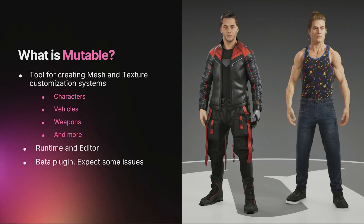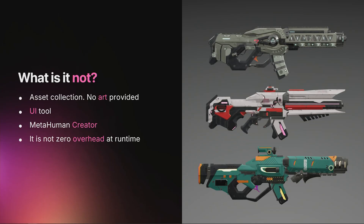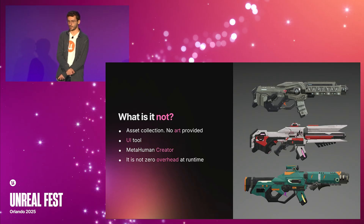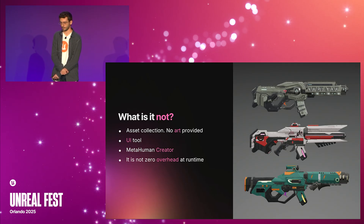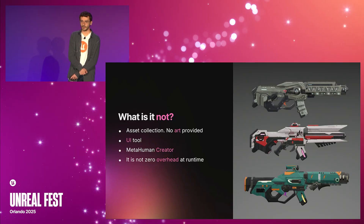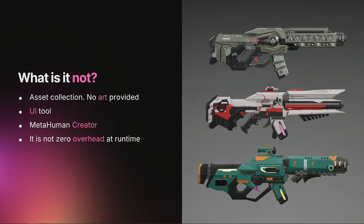To better understand what Mutable is, I also want to put some emphasis on what it's not. Mutable does not provide any assets, so you need to provide your own. Although it has features to ease the automatic creation of UIs, Mutable is not a UI tool. It is not MetaHuman Creator, but you can still use MetaHuman assets with it. And lastly, it is not a drop-in replacement for skeletal meshes, since it has a runtime overhead.